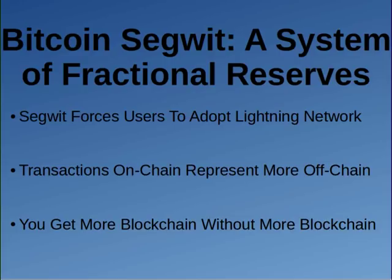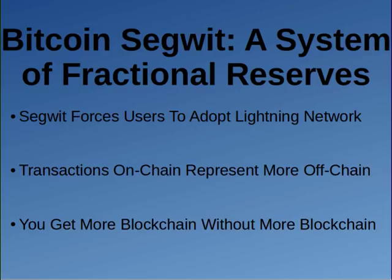Just how fractional reserves fraudulently increase the supply of loanable funds, Bitcoin SegWit fraudulently increases the size of blockchain that seems to be available. When I say fraudulently, I only say that if they try to claim it's the same type of blockchain as Bitcoin Cash. Fractional reserves are fraudulent in banking because the money is treated equally to money in non-fractional reserve banks — but SegWit and Bitcoin Cash are completely different, so there's no fraud there.